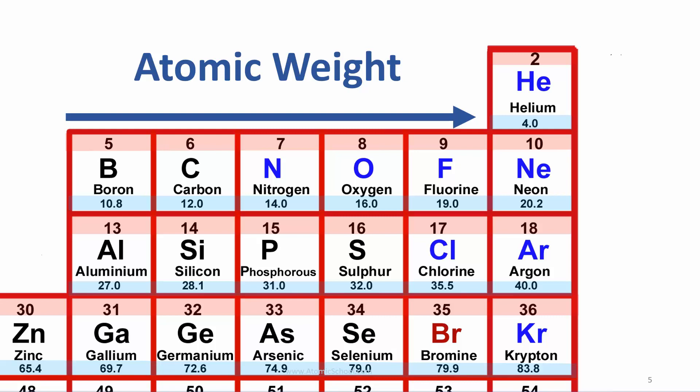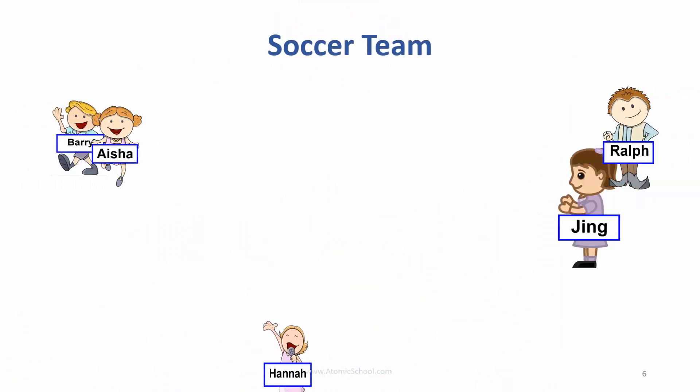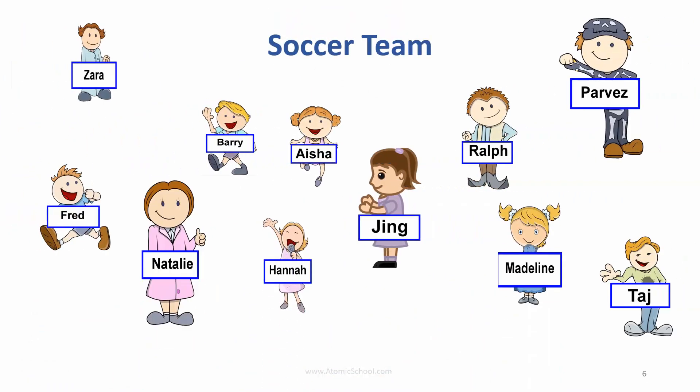We'll start with a down-to-earth example to illustrate this. Imagine you're making a soccer team. How could you line up your team to give each player his or her own number?